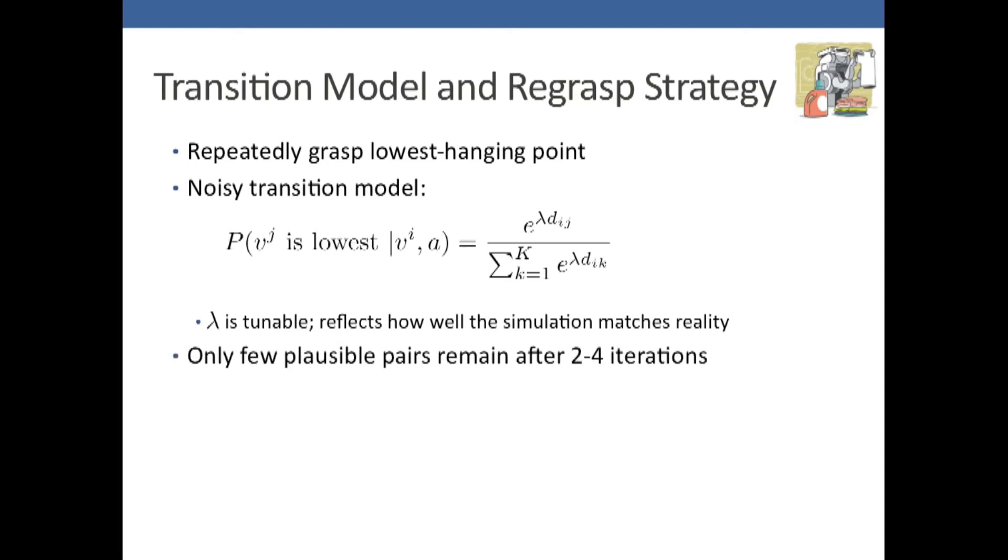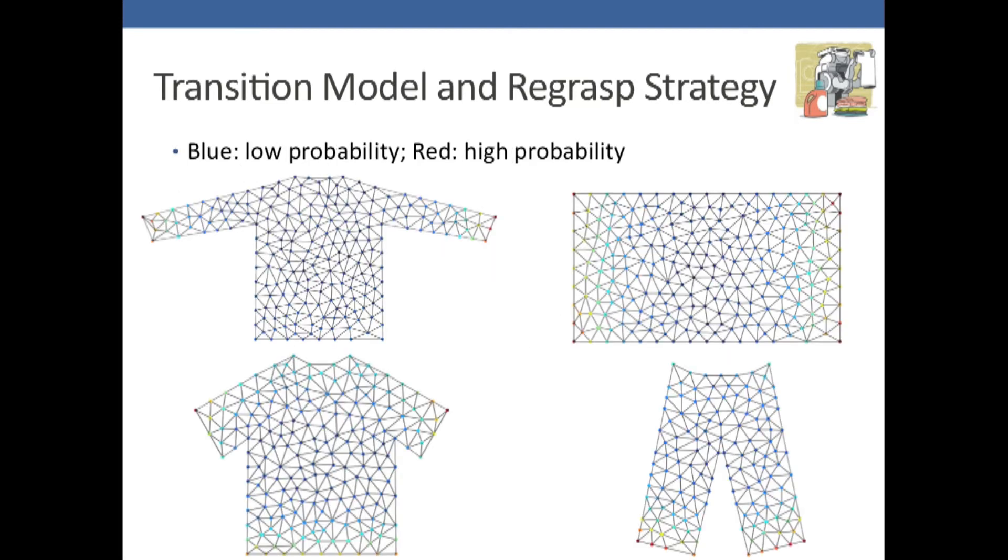After a few iterations, only a few plausible pairs remain. Here's the results of this procedure. You see a few different articles. In red, you've got high probability states, and in blue, in the middle of the articles generally, you've got low probability states. The high probability states tend to extremities of the articles.